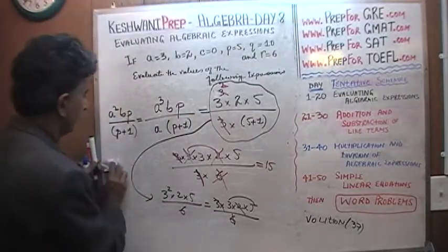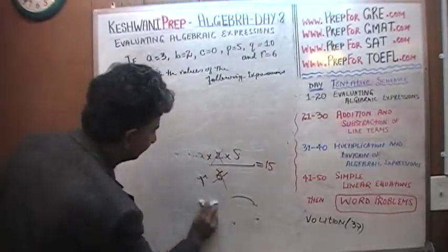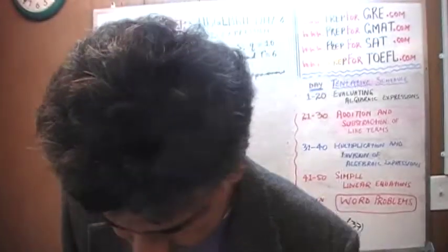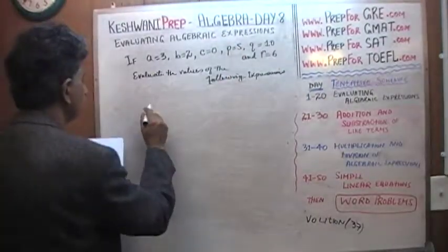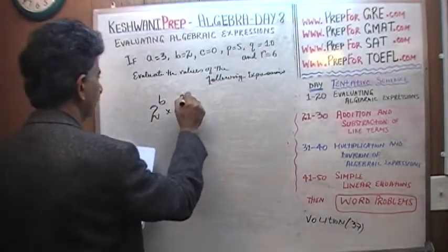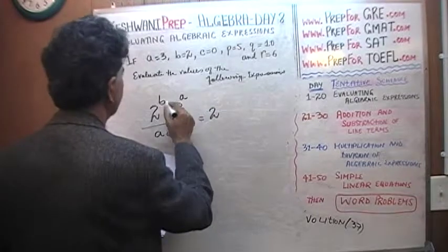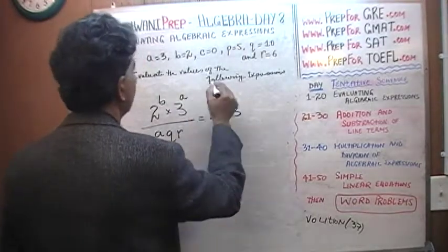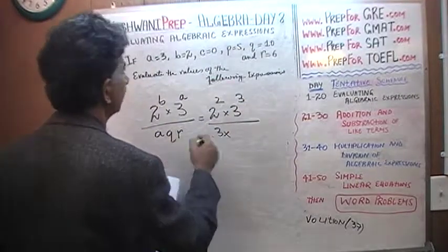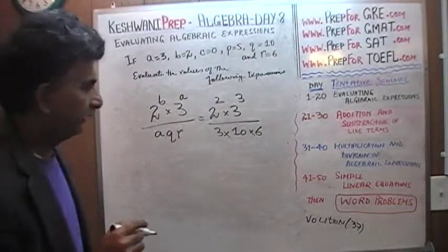Let's go to number 5. The last one. Which was 2 raised to B times 3 raised to A over A times Q times R. 2 raised to B which is 2 times 3 raised to A which is 3 over 3 times A is 3 times Q which is 10 times R which is 6. Now we have to expand everything and then simplify.